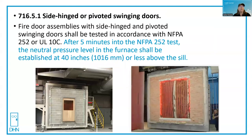Where is it required? The 2018 and similar editions of the IBC, the International Building Code, tell us that fire door assemblies that are side-hinged and pivoted swinging doors shall be tested in accordance with NFPA 252 or UL 10C. And UL 10C is positive pressure.